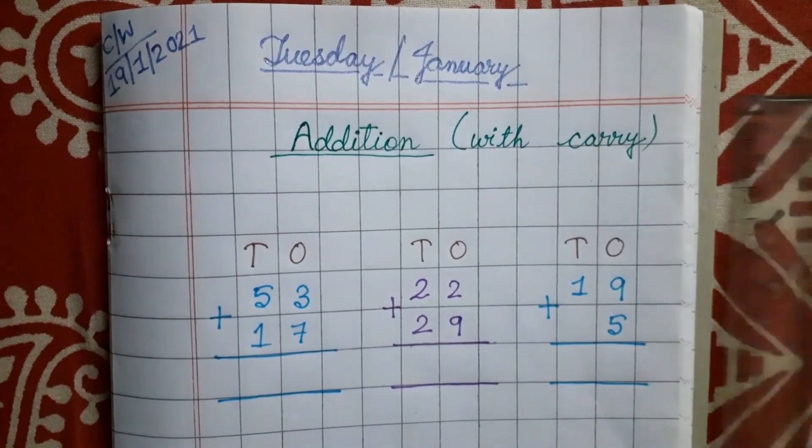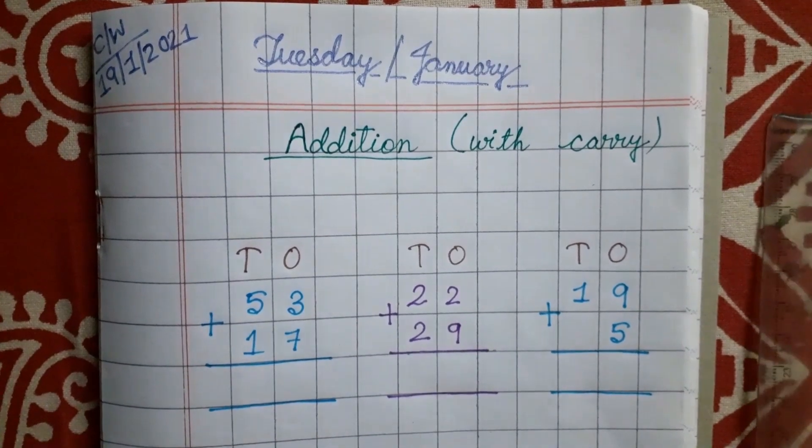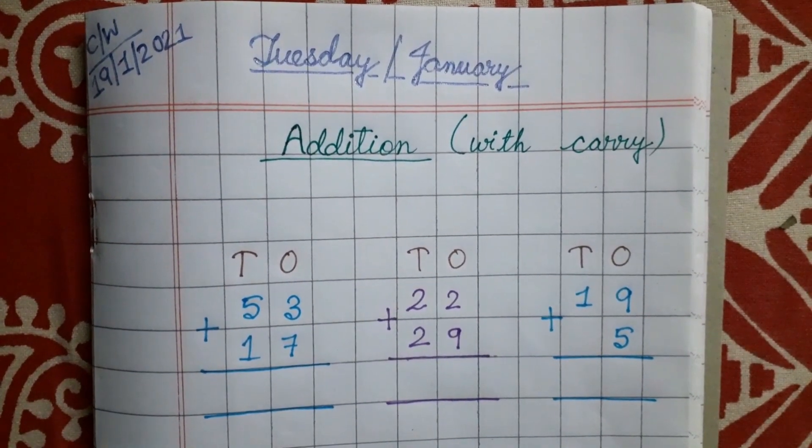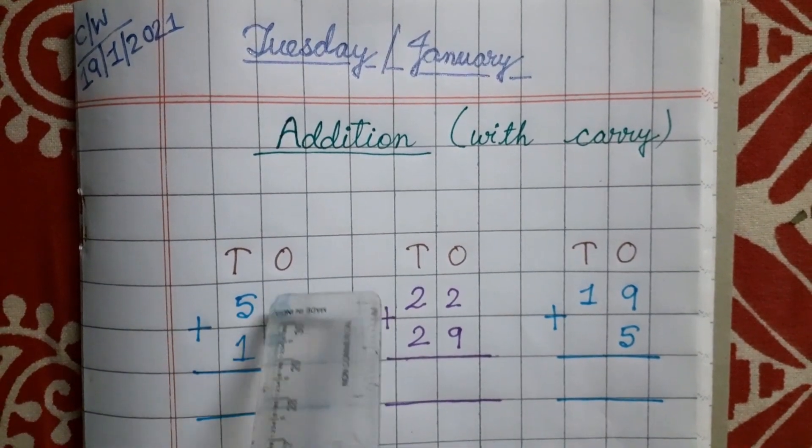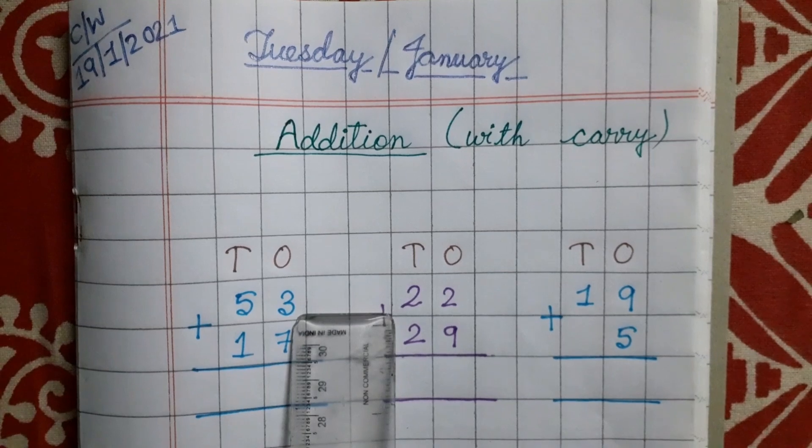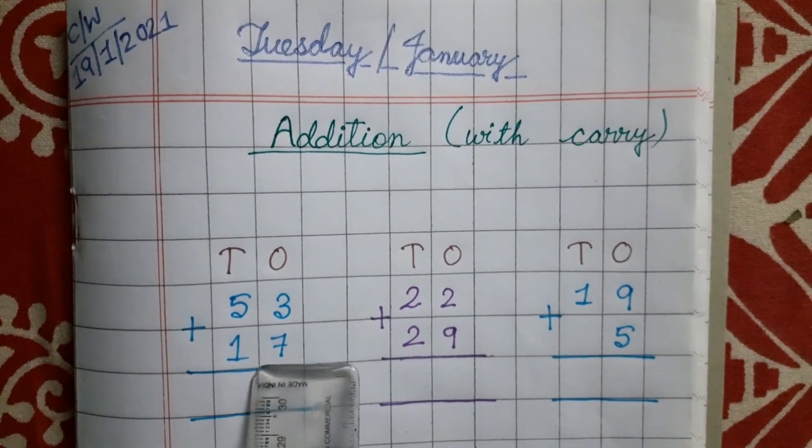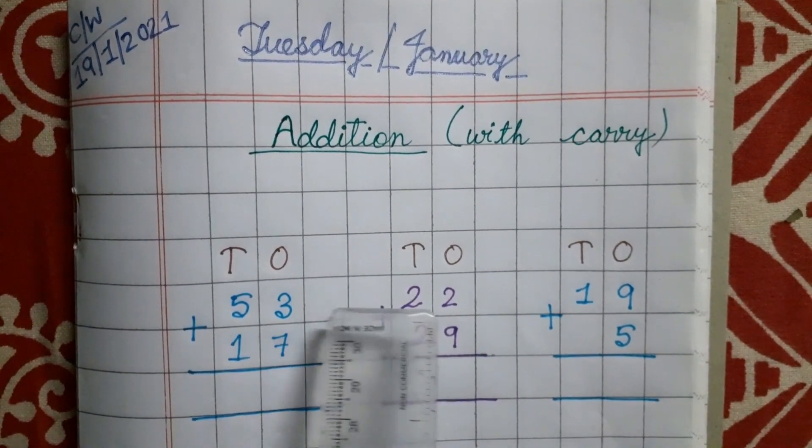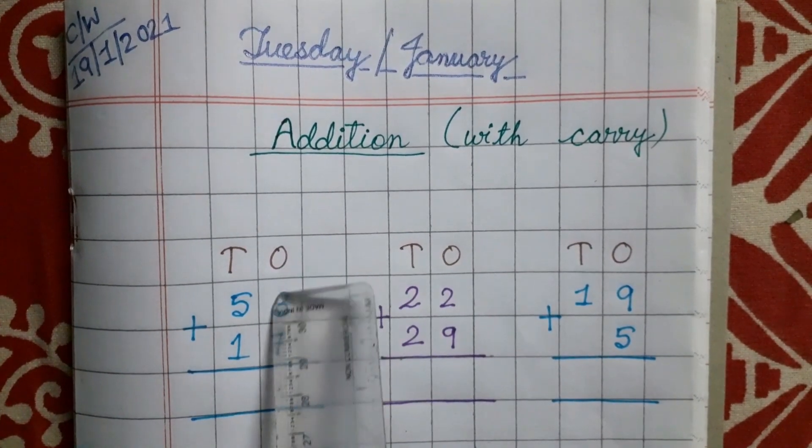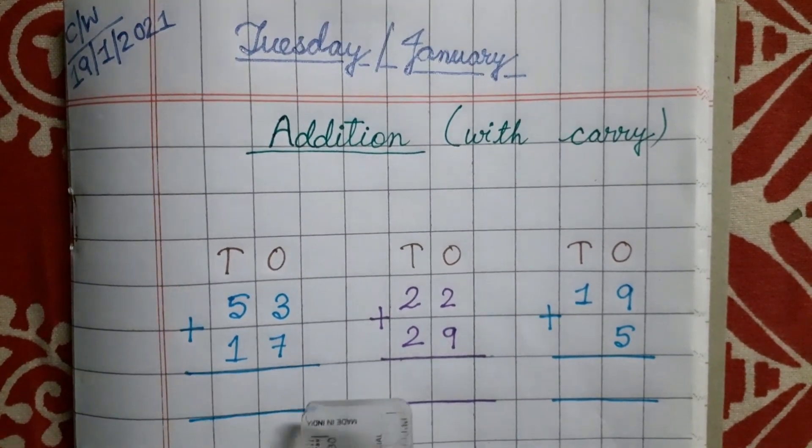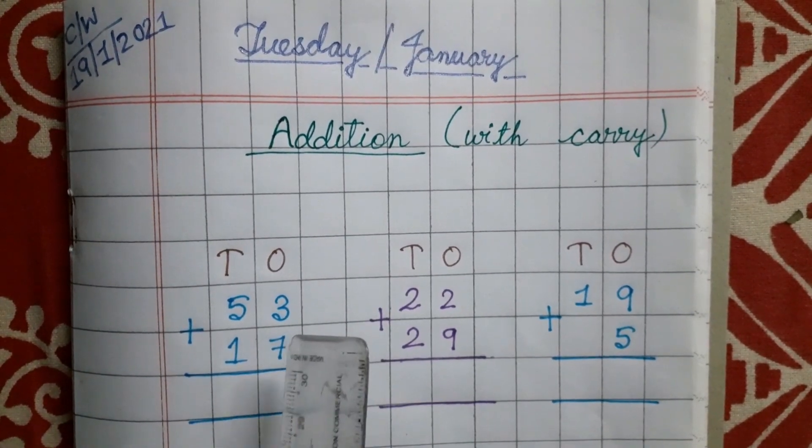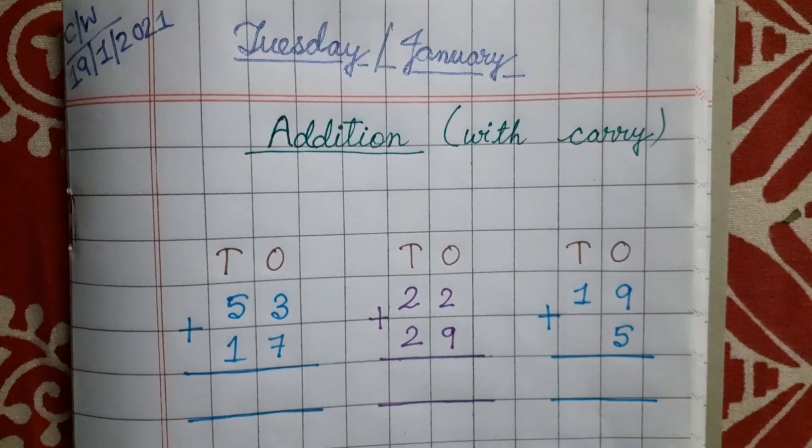I hope you remember finger house counting, right class? So with the help of that, let's start. Okay, so the first one, write one sentence. Then there is 5, 3, 53, 1, 7, 17. So first we will start from this side that is one side. Remember if one sentence are not given, that time also you start from the right side, okay? Now,